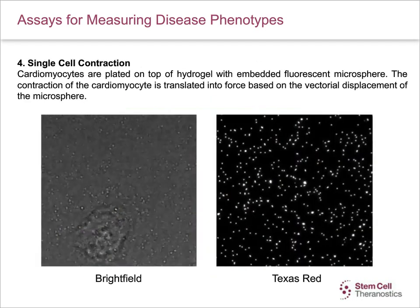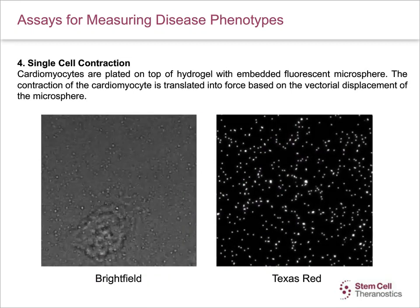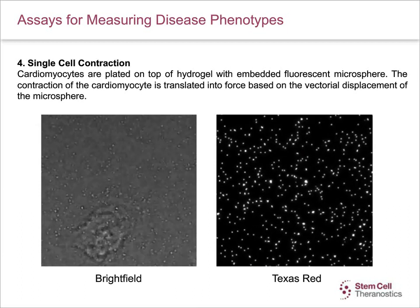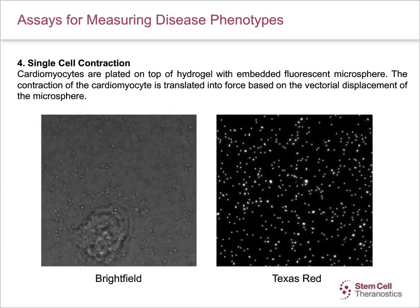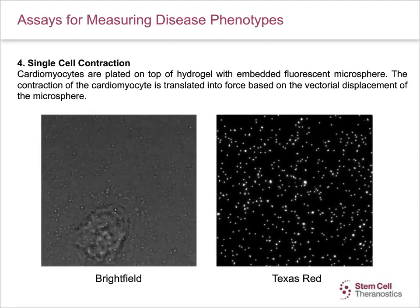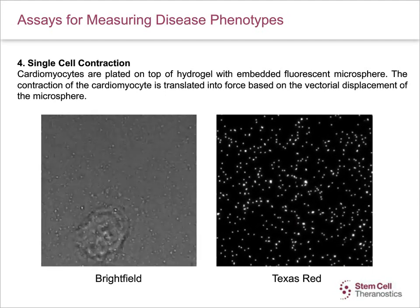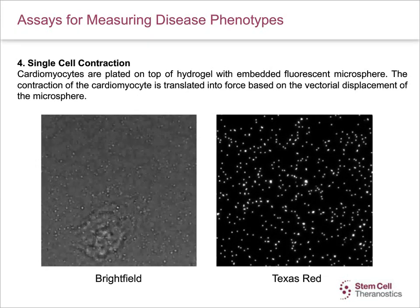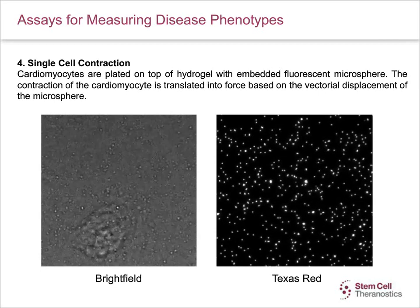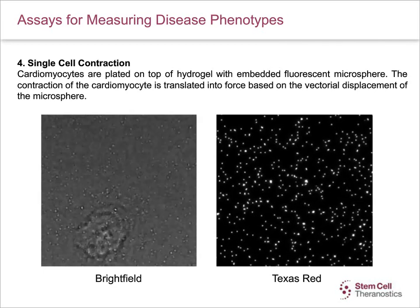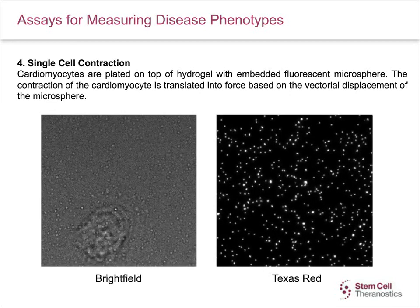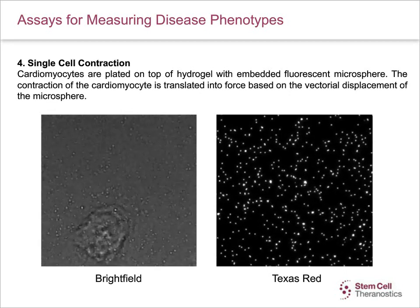This slide shows single-cell contraction assay. Cardiomyocytes are plated on top of hydrogels with embedded fluorescent microspheres. The contraction of the cardiomyocyte is translated into force based on the vectorial displacement of the microspheres. The left-hand side video is a bright-field image of one cardiomyocyte plated on these hydrogels, and the right-side video is Texas red.